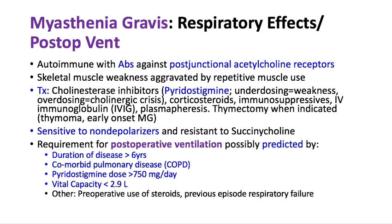Myasthenia gravis patients tend to be sensitive to non-depolarizing neuromuscular blockers — a small dose of rocuronium can cause complete paralysis. They tend to be resistant to succinylcholine. Predictors of postoperative ventilation requirement include: disease duration greater than six years, comorbid pulmonary disease (e.g., COPD), high doses of pyridostigmine, vital capacity less than 2.9 liters, preoperative steroid use, and previous episodes of respiratory failure.